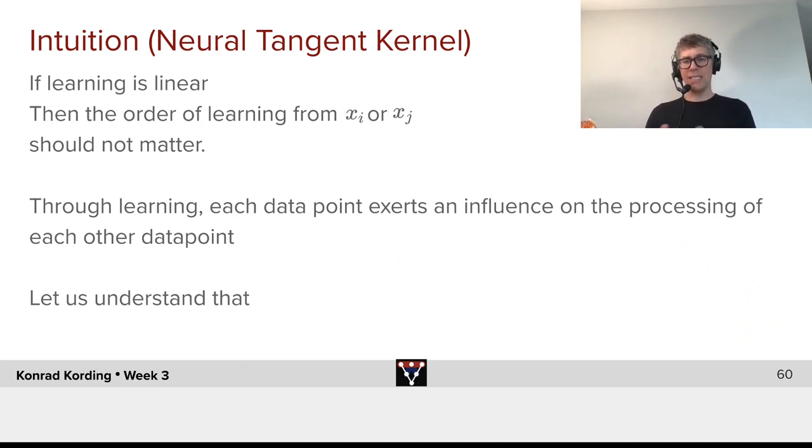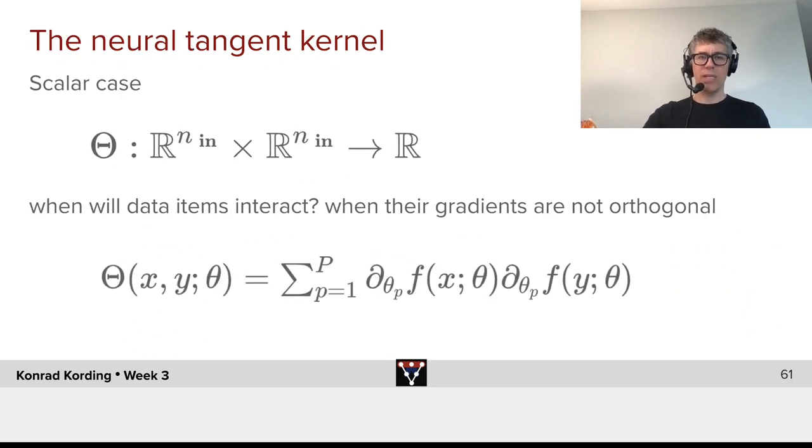Each data point can be seen as exerting an influence on the processing of each other data point. Have you seen something like that before in machine learning? Yes, you have. This is exactly the way we write about support vector machines. We will see that there is a deep link between them. So, we now have the neural tangent kernel...